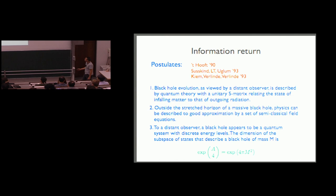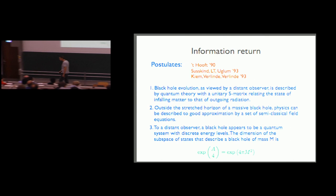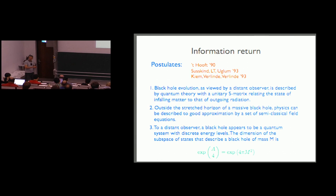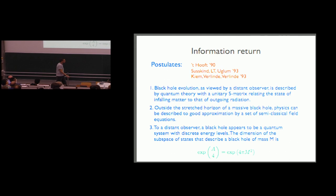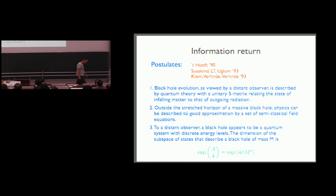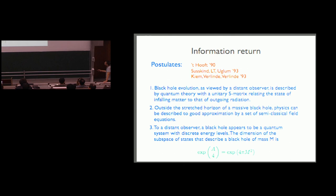Let's think about information return. This was proposed early by Don Page, who stipulated that unitarity could be restored by having information gradually transmitted from the black hole with the Hawking radiation — which is what a lot of people are implementing in different ways today. The question is how it works, because it clearly cannot use just conventional local effective field theory, as we argued earlier.